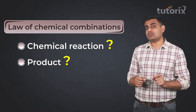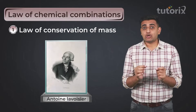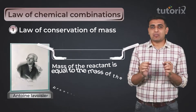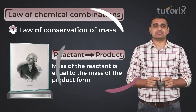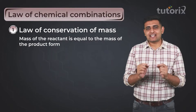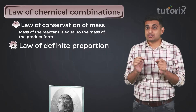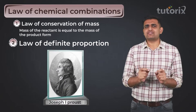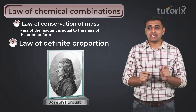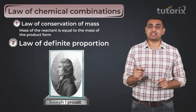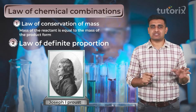In the first law of chemical combination, i.e. the law of conservation of mass, Lavoisier stated that mass is neither created nor destroyed in a chemical reaction. Whereas in the second law, i.e. the law of definite proportion, Joseph Proust explains that in any chemical substance, the element is always present in a fixed definite proportion by mass. This is what we have clearly understood in our previous sessions.